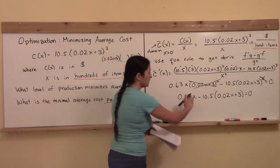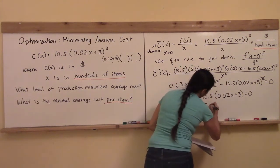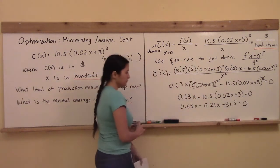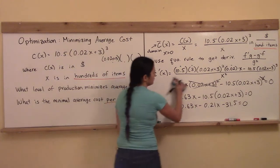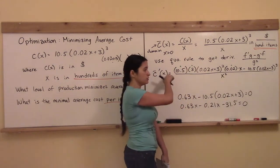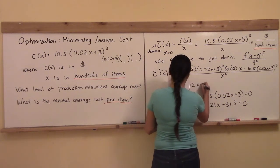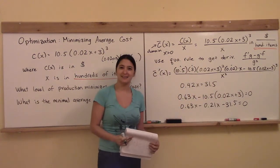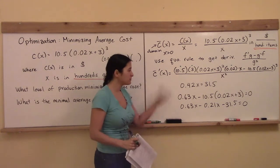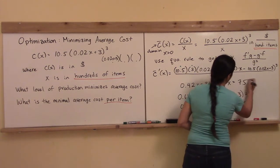Dividing that through, I get x equals 75. I had this whole complicated expression on top, and it really just reduces to this linear equation. So x = 75 is my critical point.